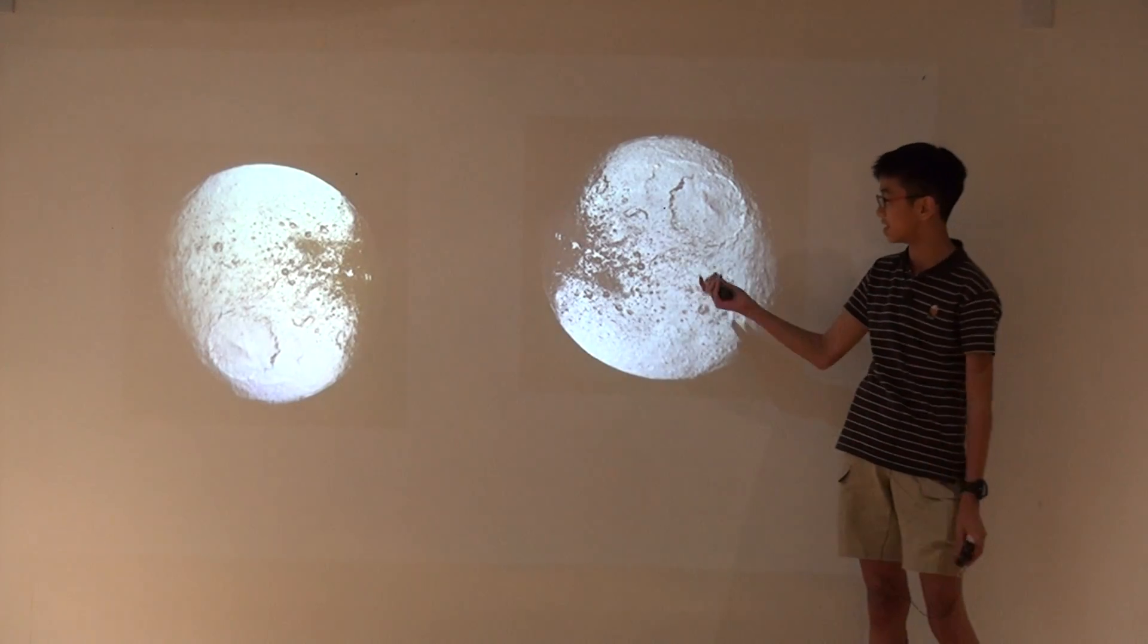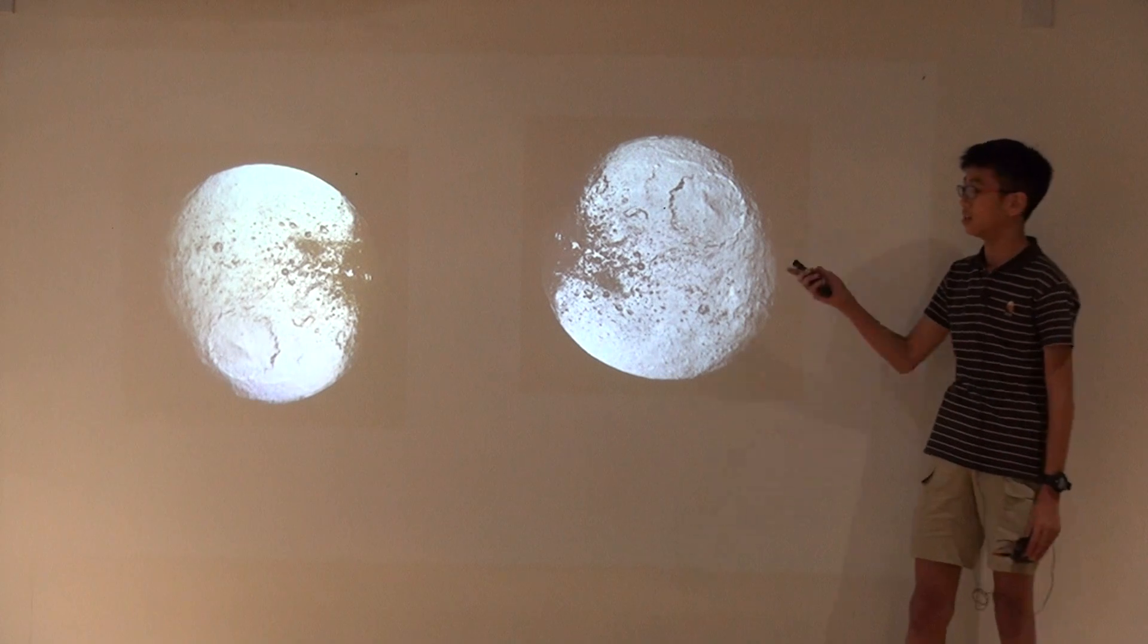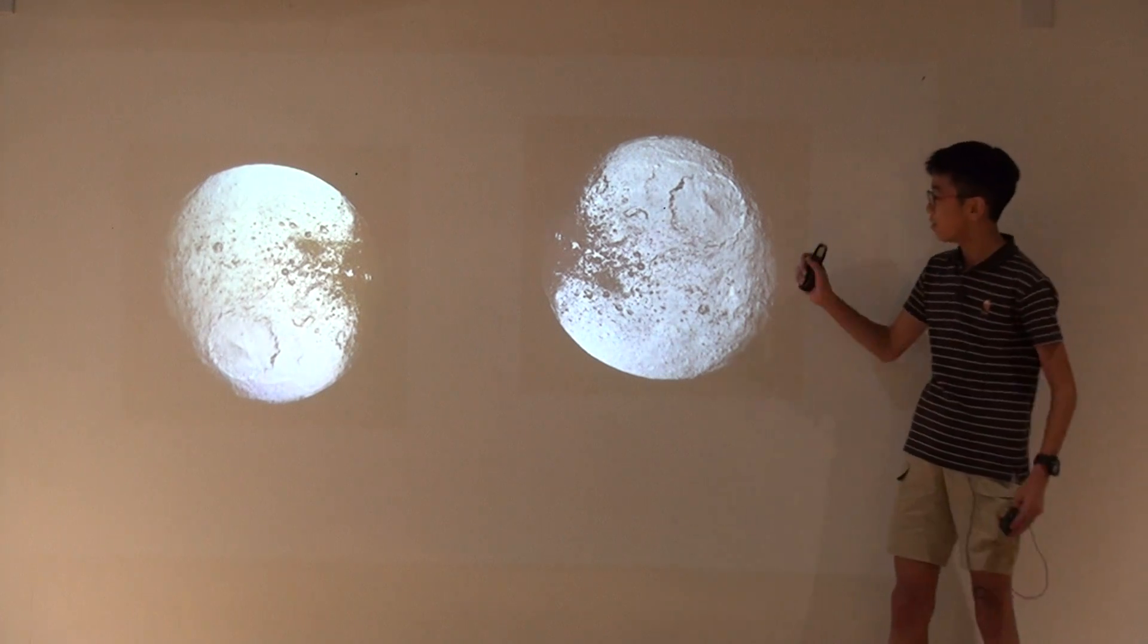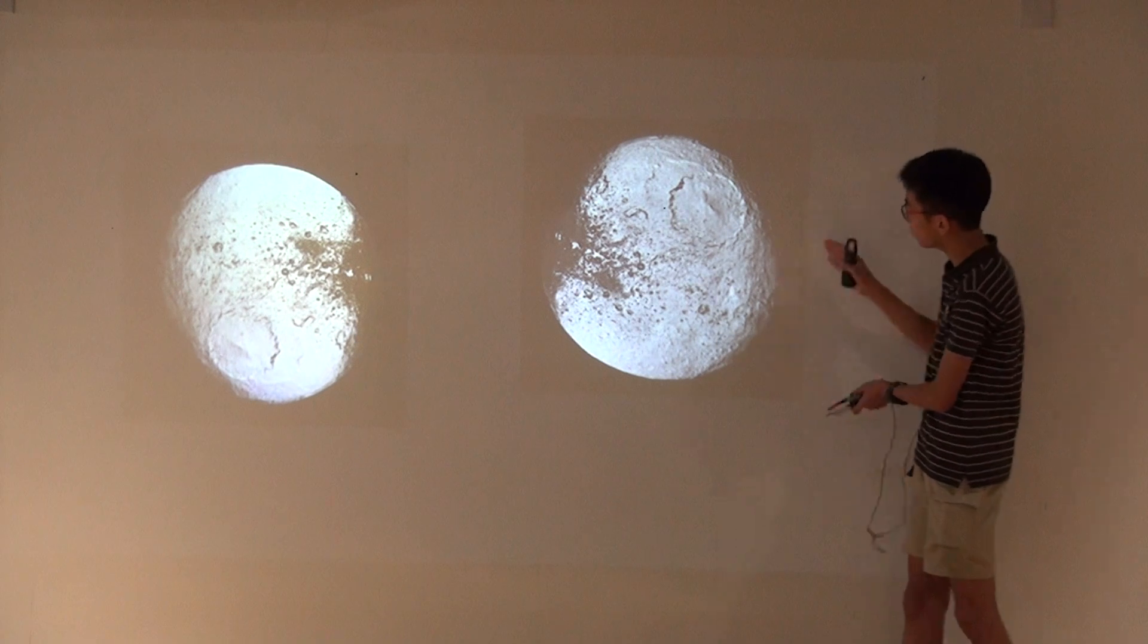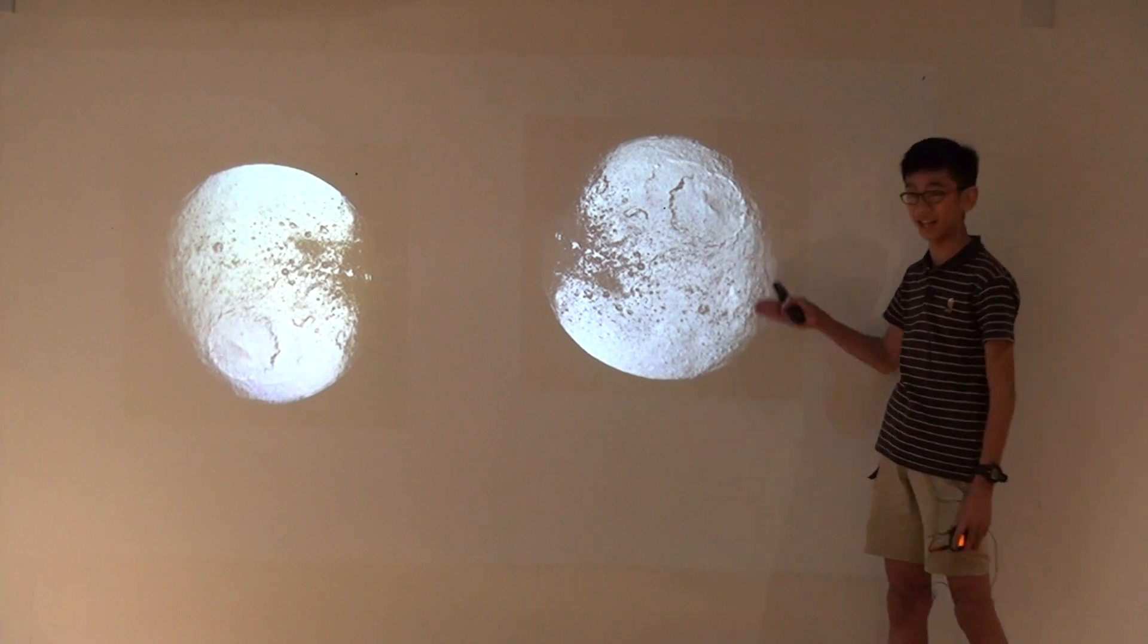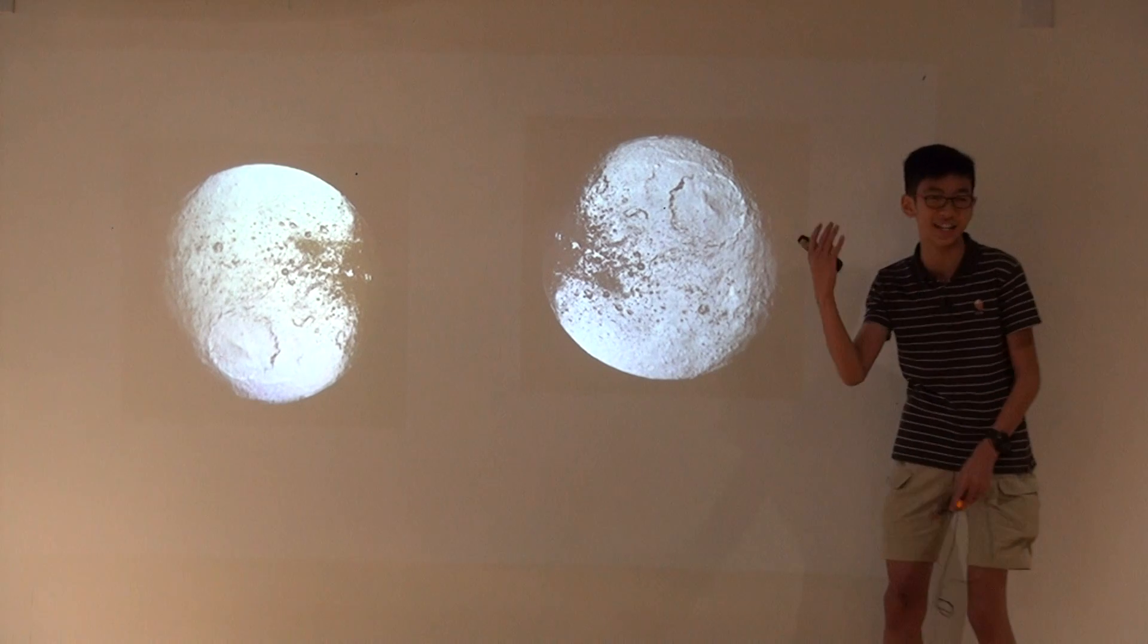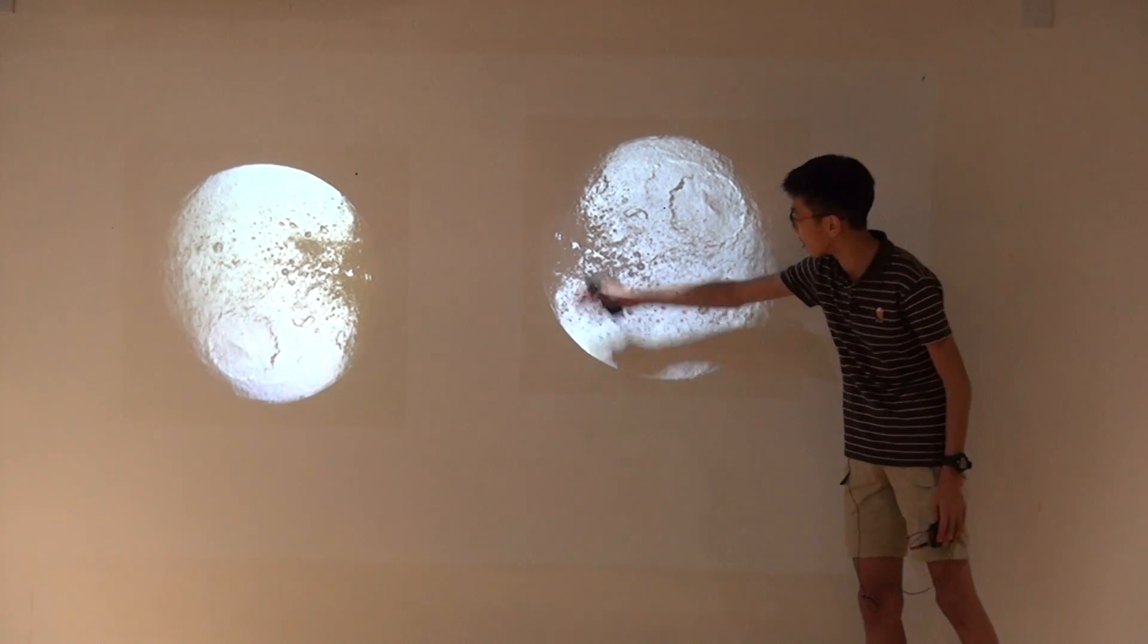And this is Iapetus. And one part of the moon is really white and shiny, not shiny like white, and the other side is really dark.